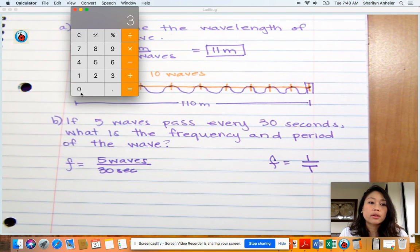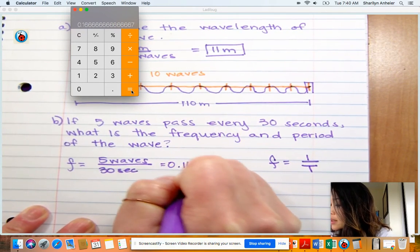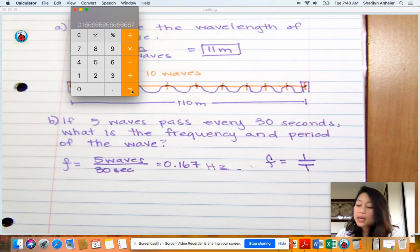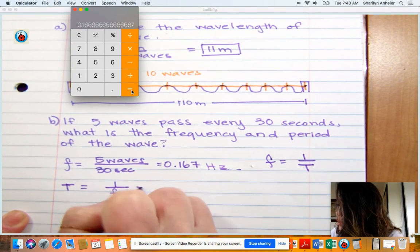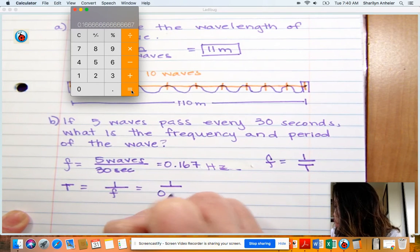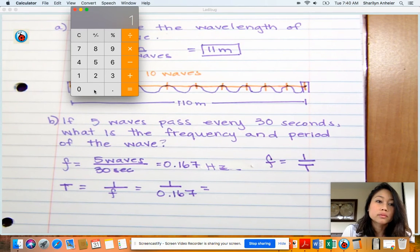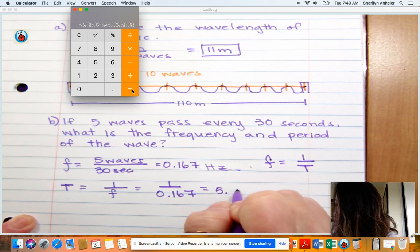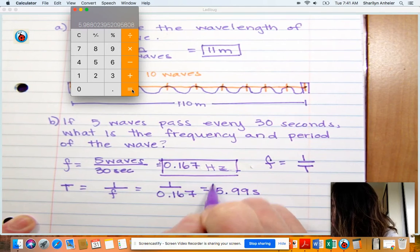Five divided by 30 gives us 0.167 hertz. That's our unit for frequency. To get the period, we take one over the frequency, which is one over 0.167, and I get 5.99 seconds.